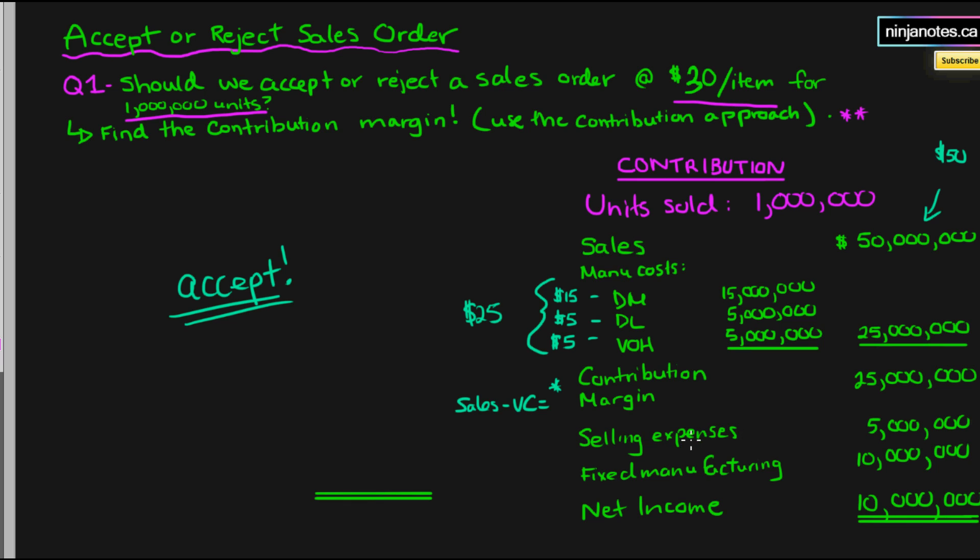And that is because these fixed costs are not going to change. The selling expenses are fixed based on the salaries we pay to our sales people, so regardless, that is not going to change because they're going to be hired in the situation where we accept the sales order or whether we don't. And our fixed manufacturing costs like the rent and our manufacturing plants, they're still going to be there as well.